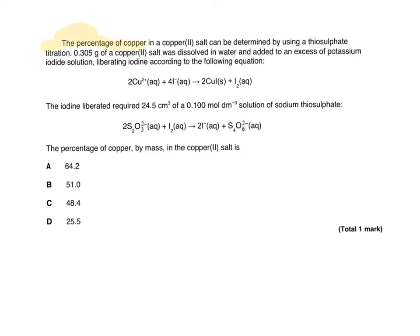We're asked for the percentage of copper in a copper salt. We're given the mass of the copper salt, so we can write an equation and work backwards from the answer to what we need to know. The percentage of copper is the mass of the copper divided by the mass of the total salt times 100. So if we can work out the mass of the copper, divide it by the total mass which is 0.305, times it by 100, we can get the percentage of copper.